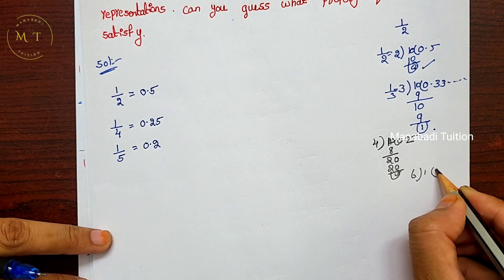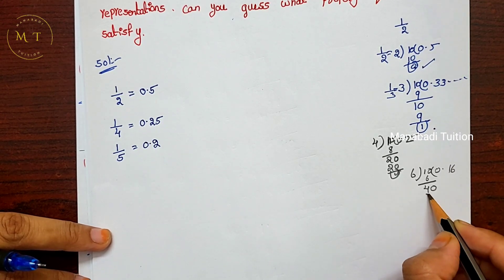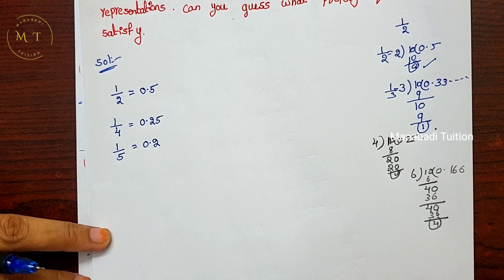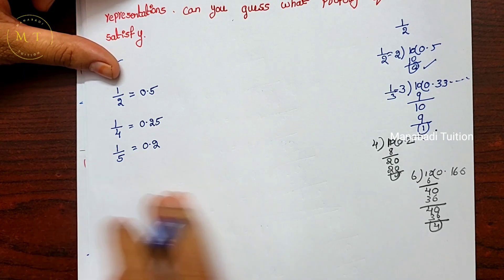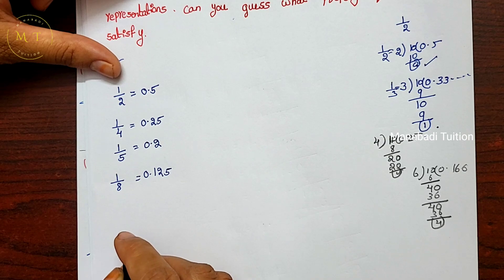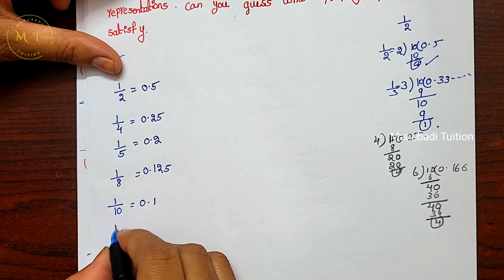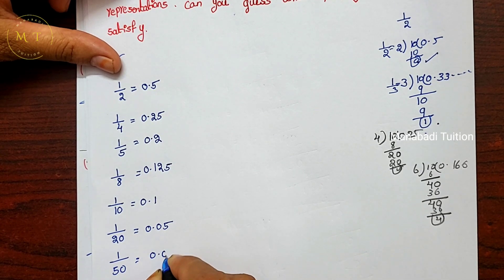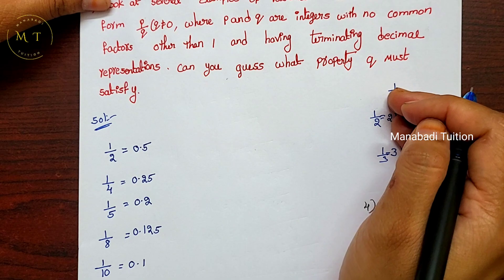1 by 6 is not terminating because the remainder never becomes 0 — we get 0.1666... 1 by 7 is also not terminating. 1 by 8 equals 0.125 — terminating. 1 by 9 is not terminating. 1 by 10 equals 0.1 — terminating. 1 by 20 equals 0.05, 1 by 50 equals 0.02, and 1 by 100 equals 0.01.